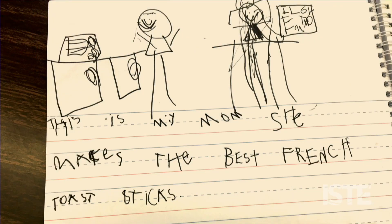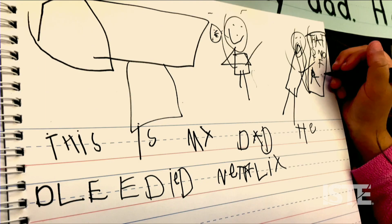Here's the one for my wife. It says, 'This is my mom. She makes the best French toast sticks.' You could see there's happy faces, ideas of nurturing, providing — all great things. And then for me: 'This is my dad. He deleted Netflix.'